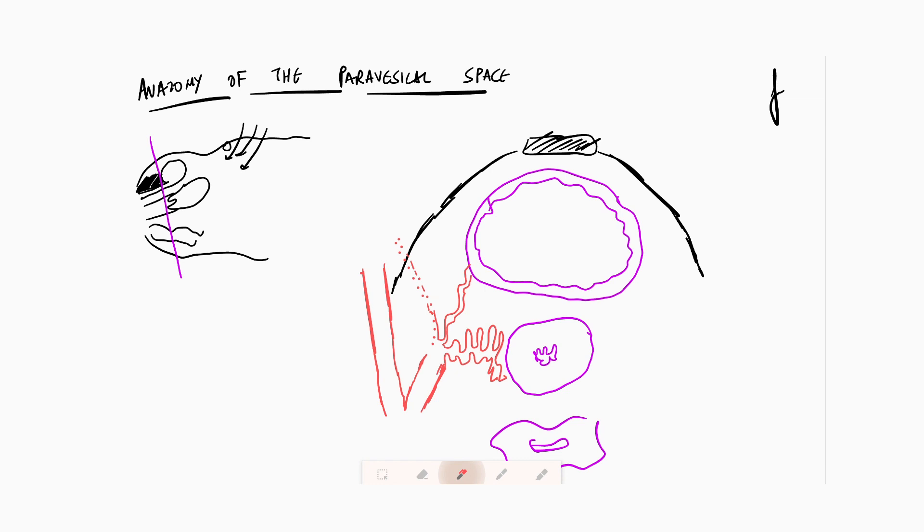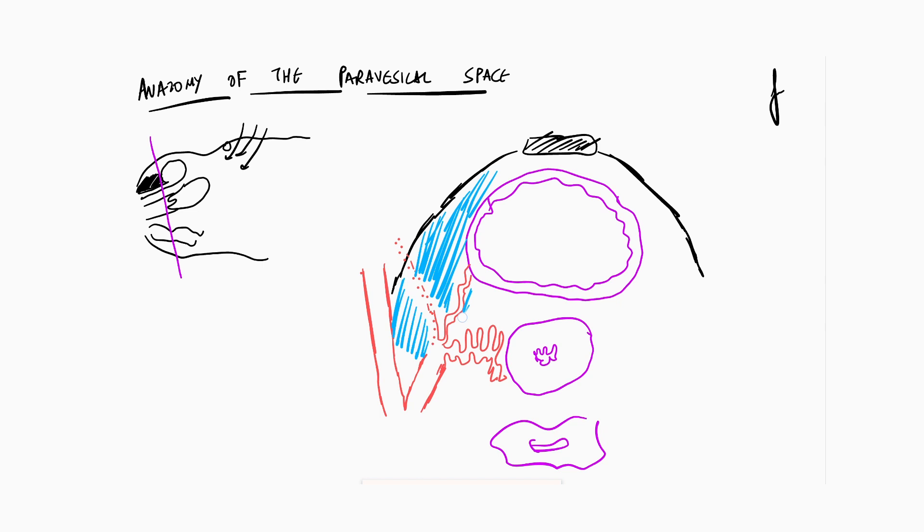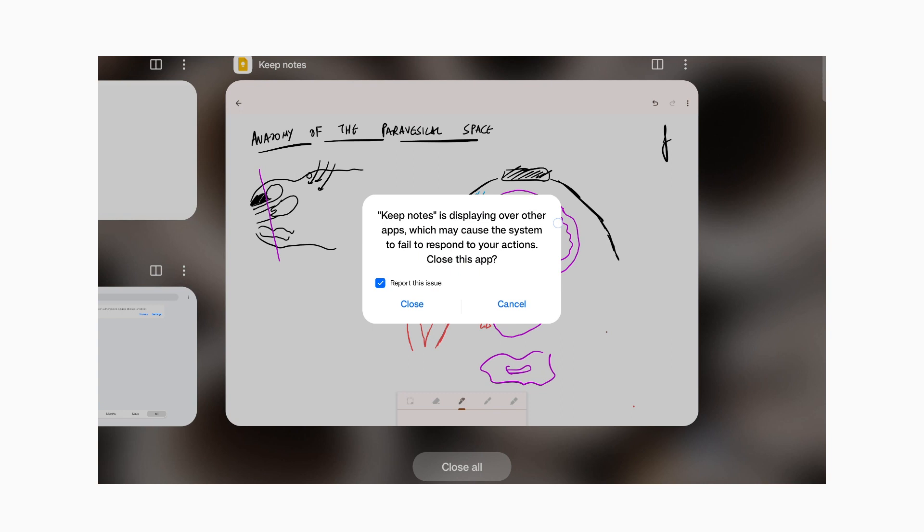Now you must understand that when we talk of the paravesical space, it is this space that we are worried about - the region which is close to the bladder. But no anatomy is complete until I mark and draw the ureter, which goes under the uterine artery and then enters the bladder. Water under the bridge, we all know this, so I am drawing it in dotted line.